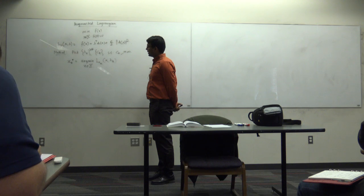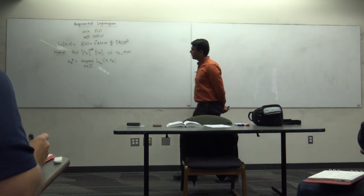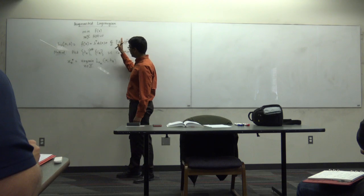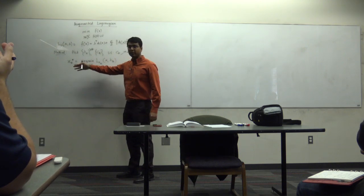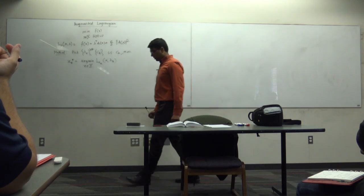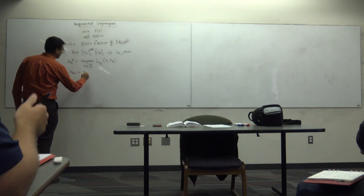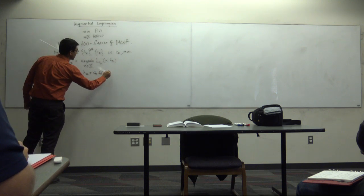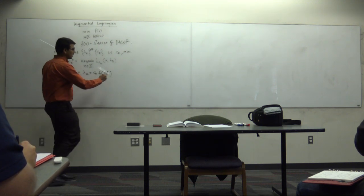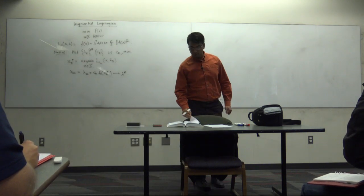If we were in the 1950s, there would be no way to know lambda_k, so you would just pick lambda_k equals 0 or some constant, keep increasing c_k to infinity, solve the problem, and progressively converge to an optimal or locally optimal solution. But someone recognized that if you pick lambda_{k+1} = lambda_k + c_k * h(x_k*), then under sufficiently mild conditions, this converges to lambda*.